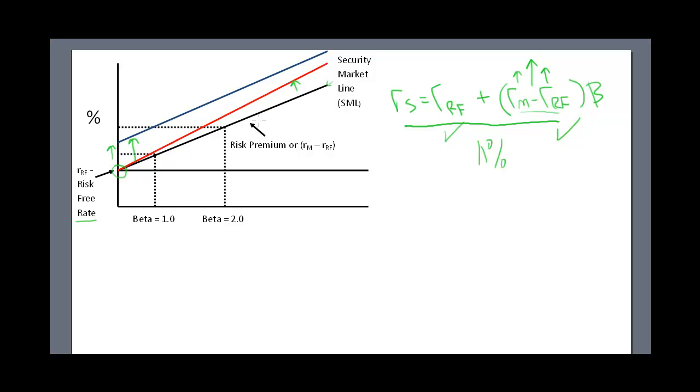Now the last number is referred to as beta. Beta's here at the bottom. You can take a look at beta of one. Generally, what a beta of one means is it's going to match whatever index you use.